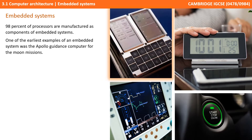One of the earliest examples of an embedded system was the Apollo Guidance Computer used for the Moon missions. Embedded systems range from portable devices such as digital watches and MP3 players, to large stationary installations like traffic lights, factory controllers, and largely complex systems like hybrid vehicles, MRI and avionics.